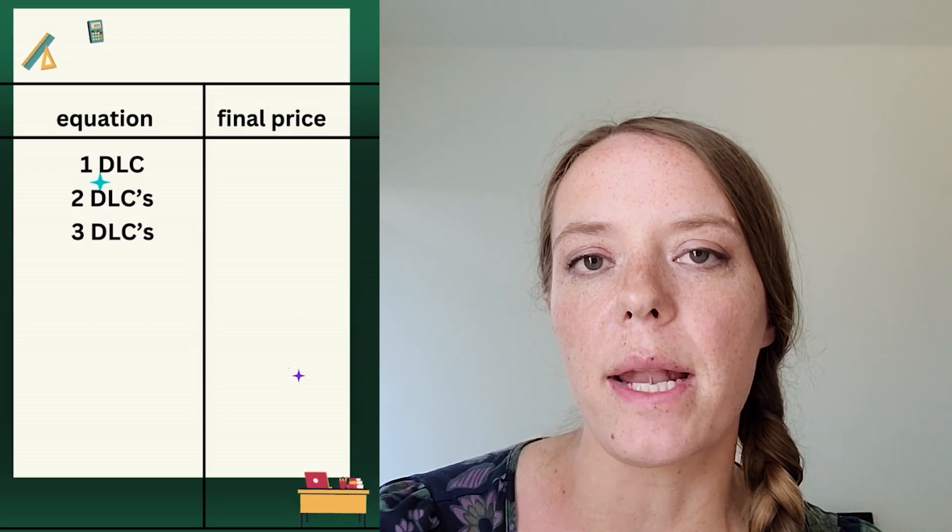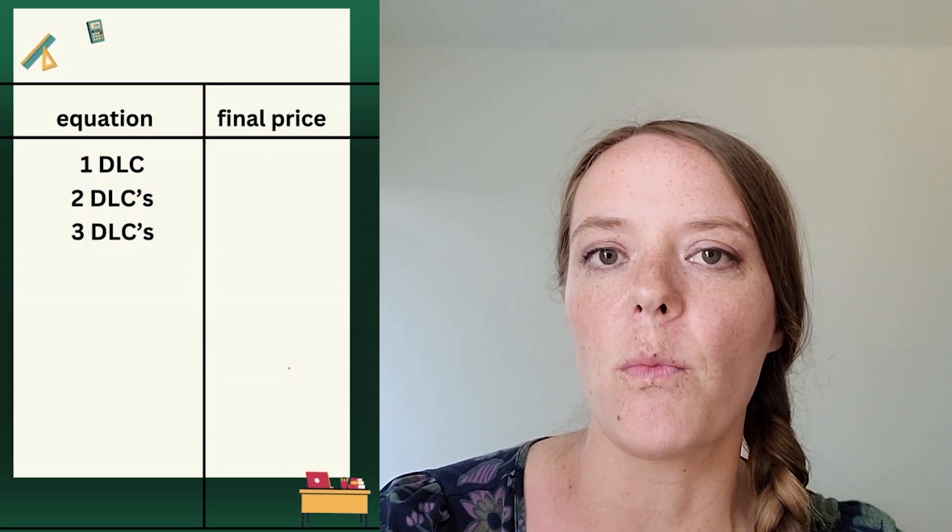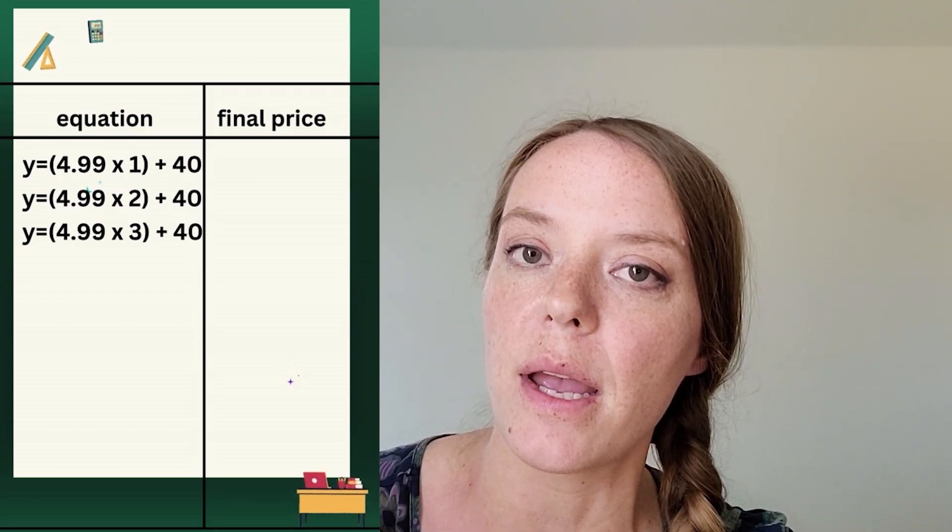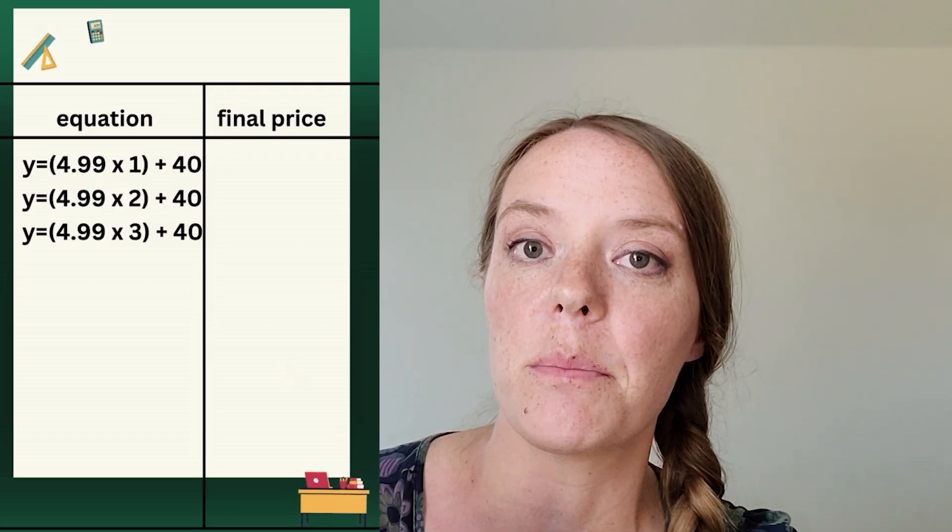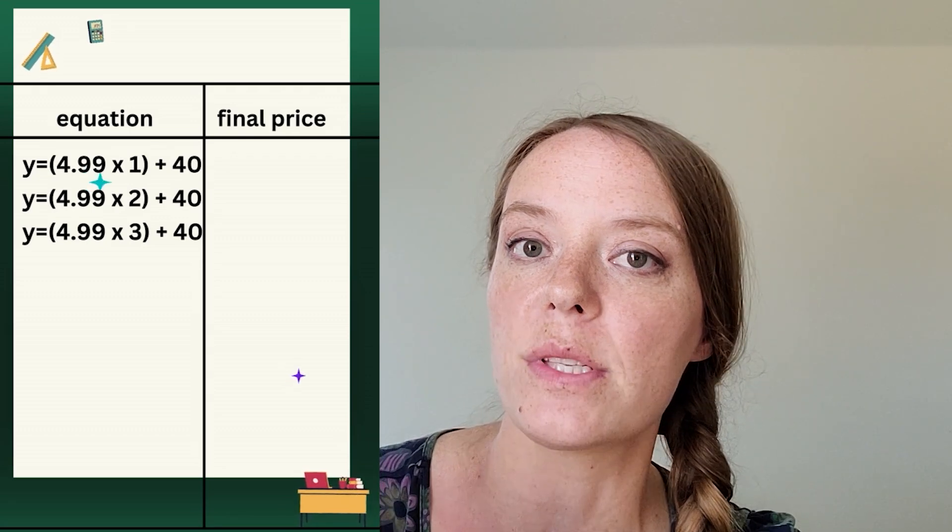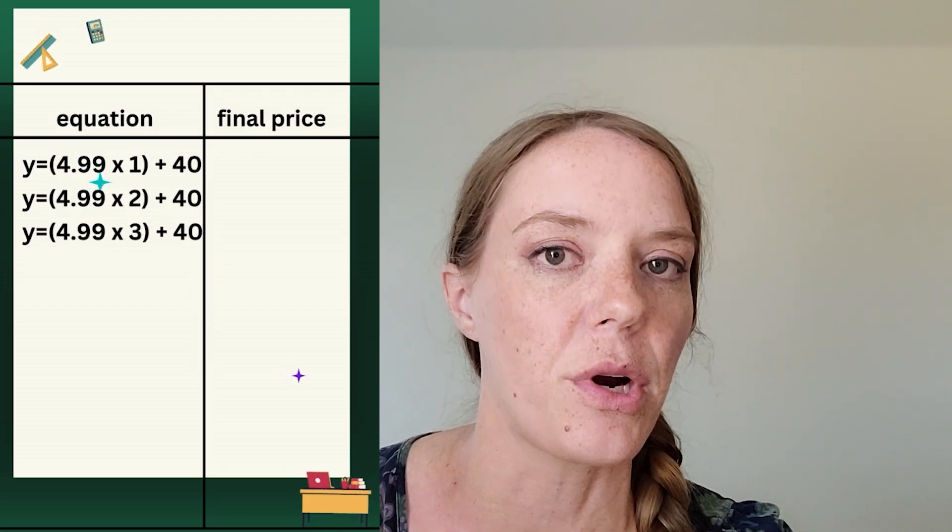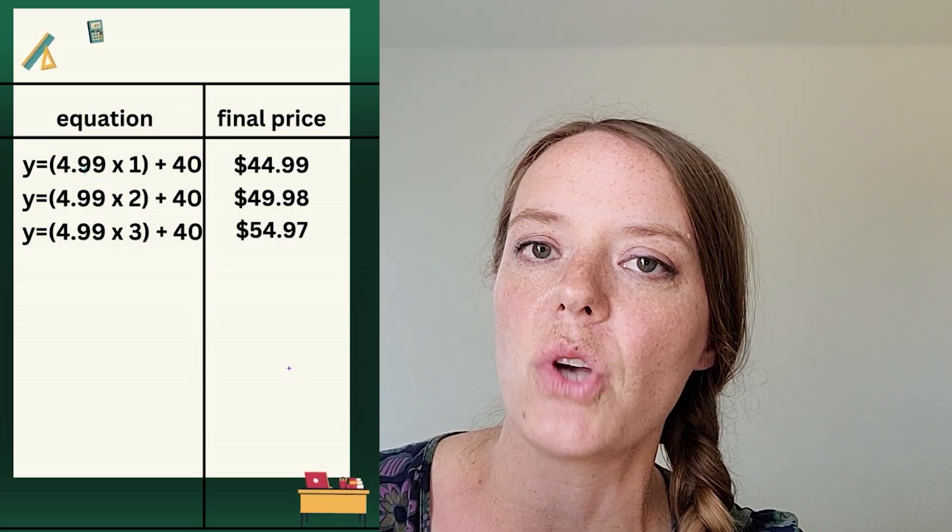Okay, so hopefully you're writing it in the same form, mx plus b. You can see I have one times 4.99 plus 40, and then I have two times 4.99 plus 40, and then of course the original problem, three times 4.99 plus 40. And then you can check your answers with mine, see if you got the same total price.